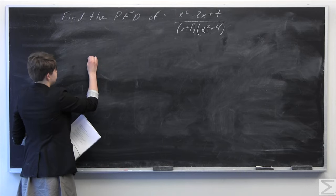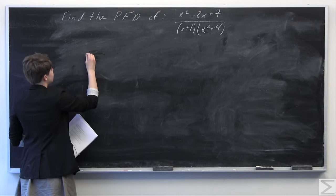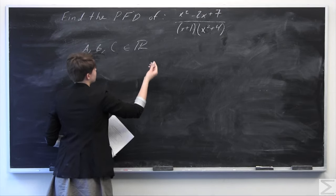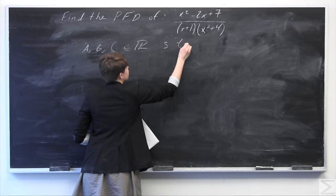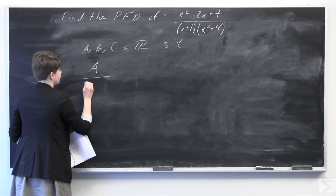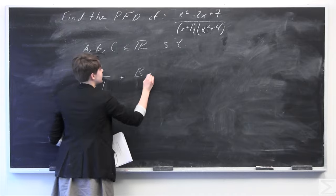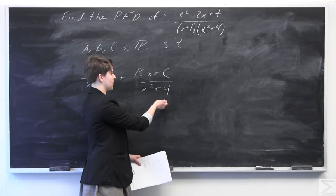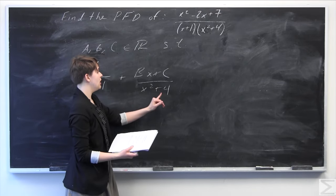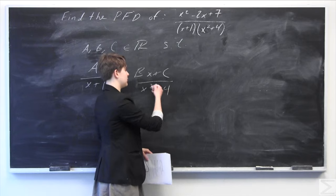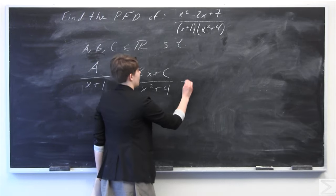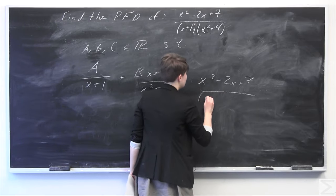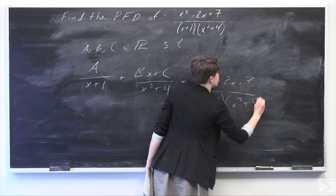We need to find real numbers a, b, and c such that we have a over x plus 1, plus bx plus c over x squared plus 4. We use bx plus c instead of just b, because we have an unfactorable quadratic in the denominator. And that's going to be equal to x squared minus 2x plus 7 over x plus 1 times x squared plus 4.